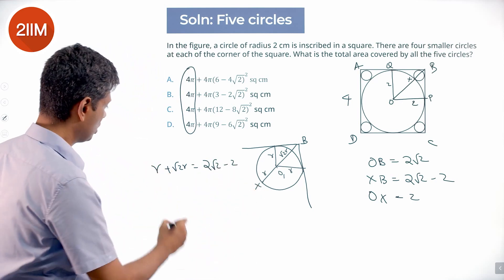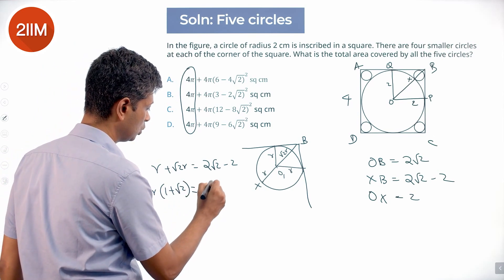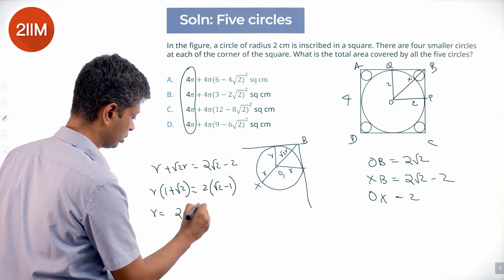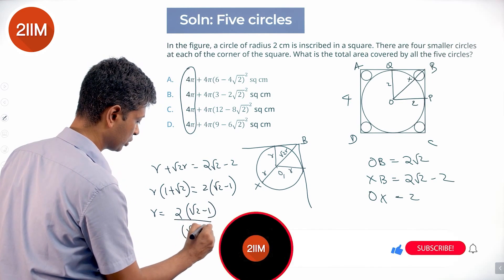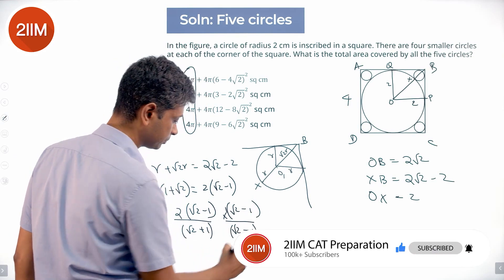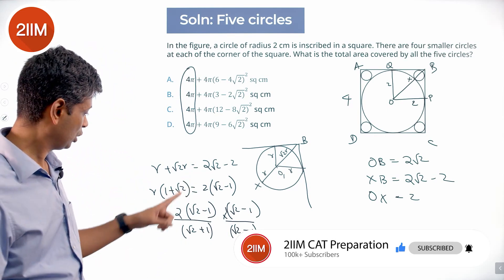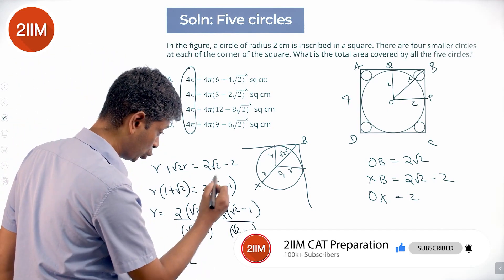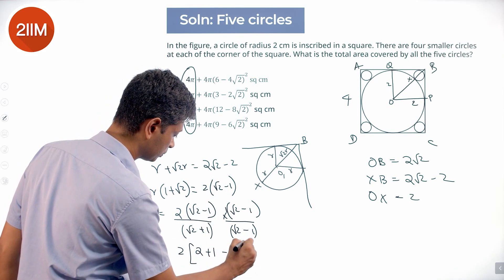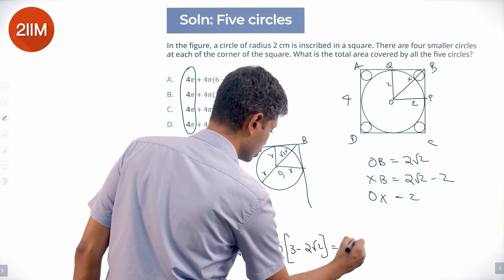We have r(1 + √2) = 2(√2 − 1). So r = 2(√2 − 1)/(√2 + 1). Multiply numerator and denominator by (√2 − 1): the denominator becomes (√2)² − 1² = 1. The numerator becomes 2(√2 − 1)² = 2(3 − 2√2) = 6 − 4√2.